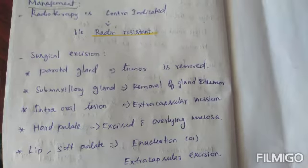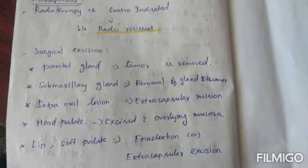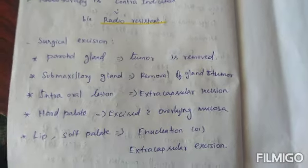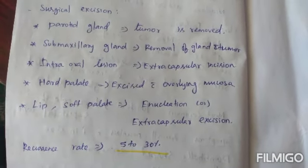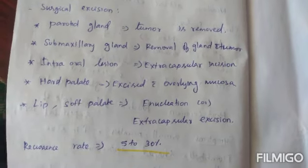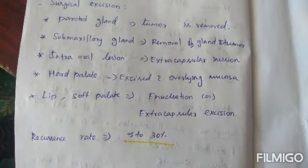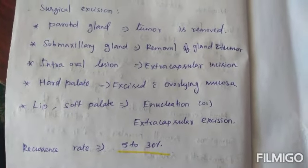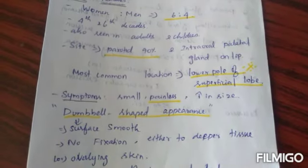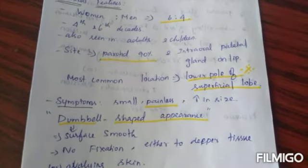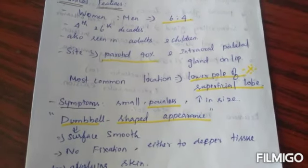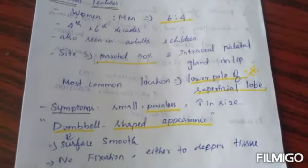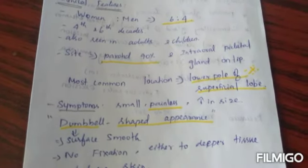For intraoral lesions of the lip and soft palate, we have to do enucleation or extracapsular excision. Recurrence is an important point: it has a low recurrence rate of 5 to 30 percent, due to hypocellularity, incomplete resection, and encapsulation. The most commonly affected salivary gland is the parotid gland at 90 percent, followed by intraoral palatal gland and lips. The most common location within the parotid gland is the lower pole of the superficial lobe, and the tumor is mostly asymptomatic.